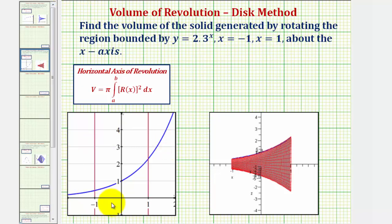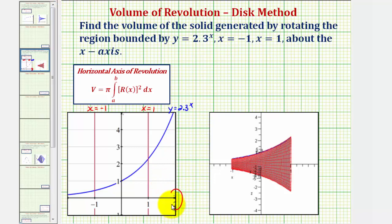Looking at our graph here below, here's x equals negative one, here's x equals one, and here's our function y equals 2.3 raised to the power of x. We're rotating about the x-axis, so the bounded region would be this region here. If we rotate this region about the x-axis, it creates this solid here, and our goal is to find the volume of this solid.